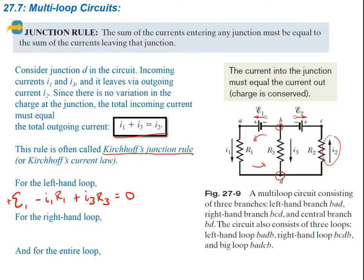We might have more unknowns, so it's helpful to find equations for the other loops. For the right-hand loop, starting at point B going counterclockwise: we first hit resistor R3 going with the current, so that's minus I3*R3. Then the next resistor — going with the current — so we subtract I2*R2. Then we hit the EMF device going against it, so that's minus epsilon 2, equal to zero.